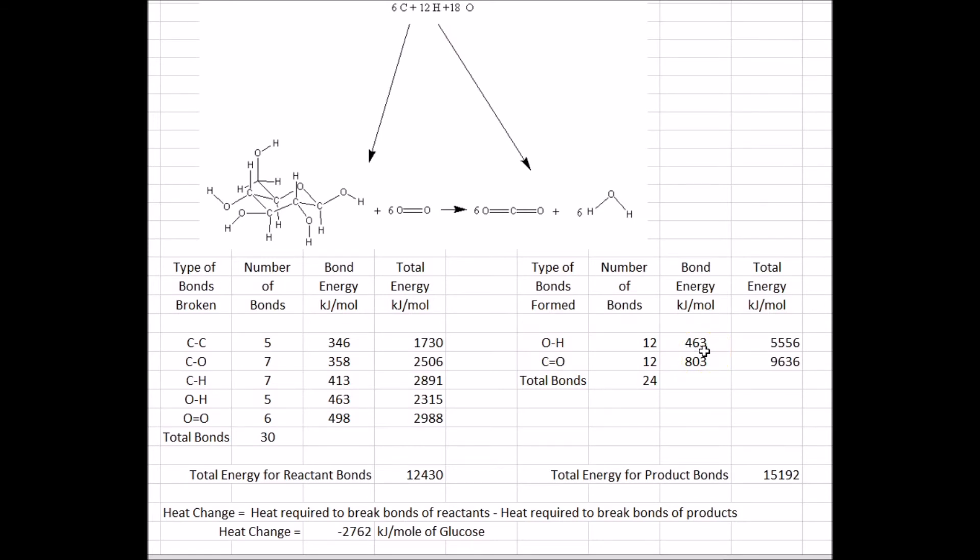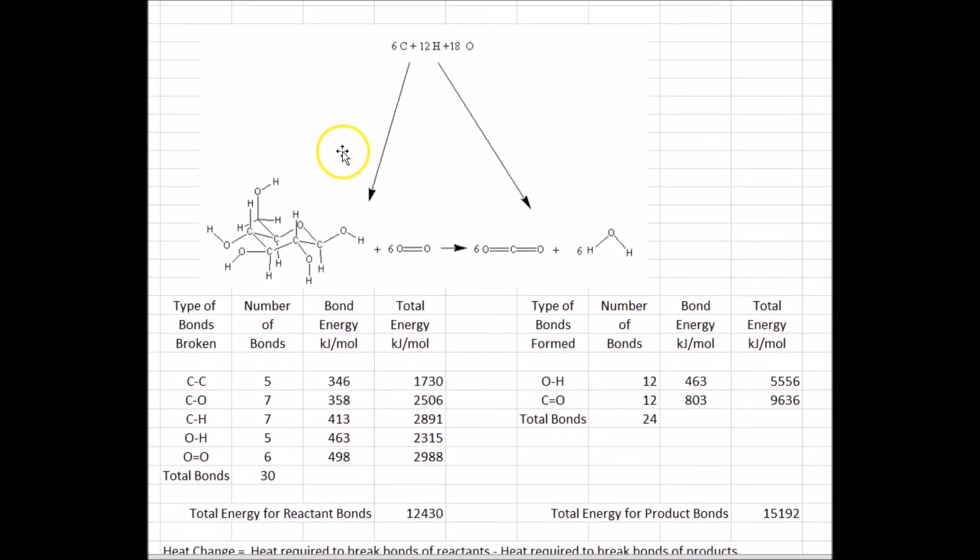And the carbon-oxygen double bond is a very strong bond, whereas the bonds that are broken, by and large, are not that strong. And even the oxygen-oxygen double bond for a double bond is not that strong. So if you add up the number of bonds broken times their respective energies and add it all up, you get 12,430 kilojoules required to break all the bonds of the reactants.